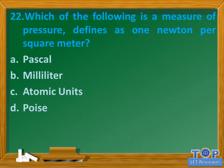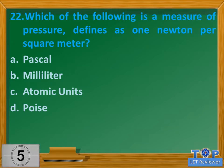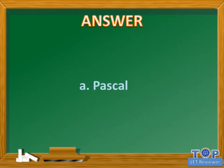Question number 22. Which of the following is a measure of pressure, defined as 1 newton per square meter? A. Pascal. B. Milliliter. C. Atomic units. D. Poise. Answer: A. Pascal.